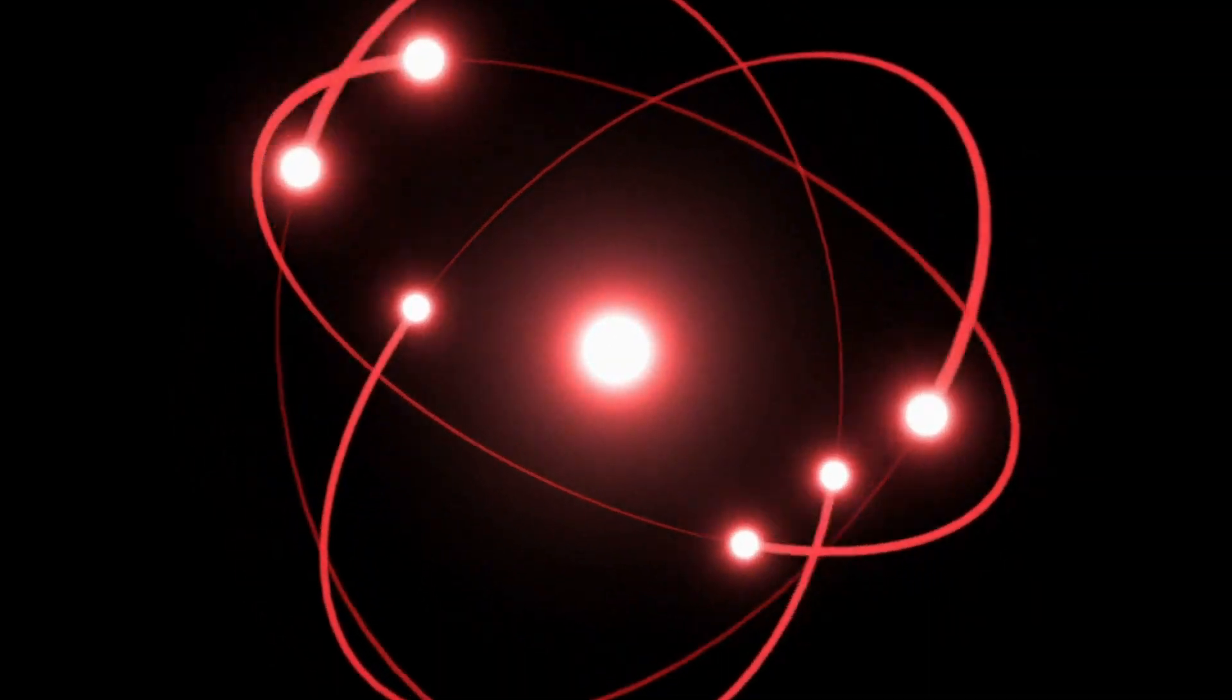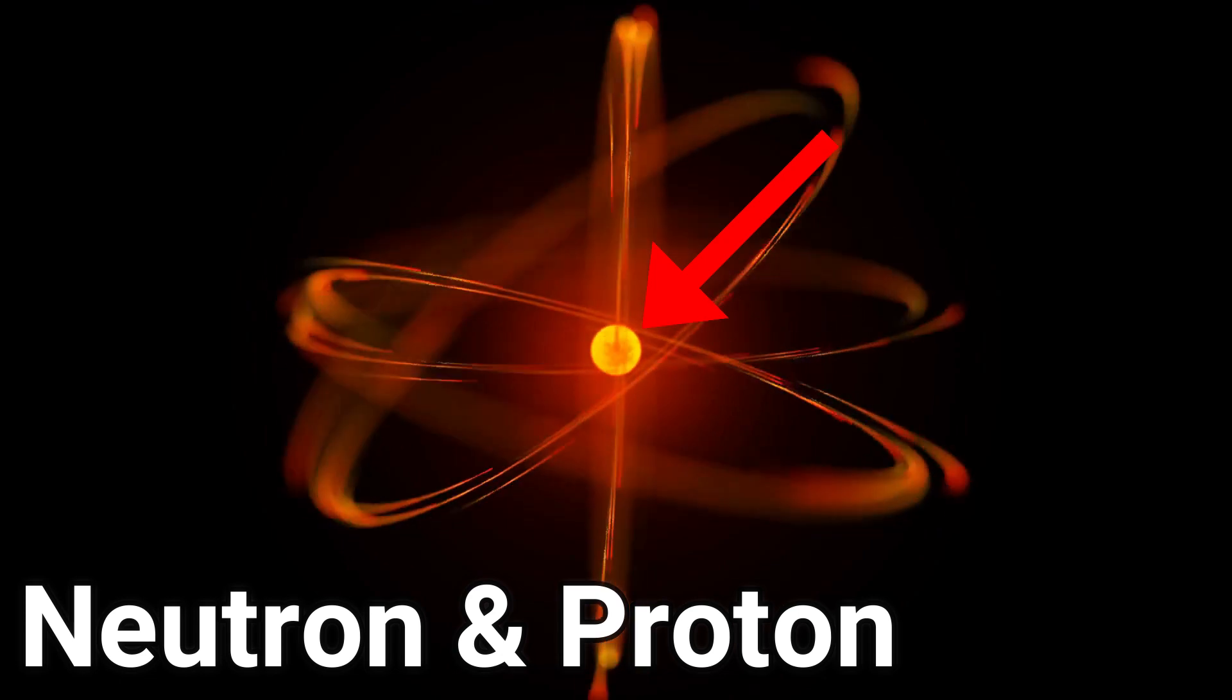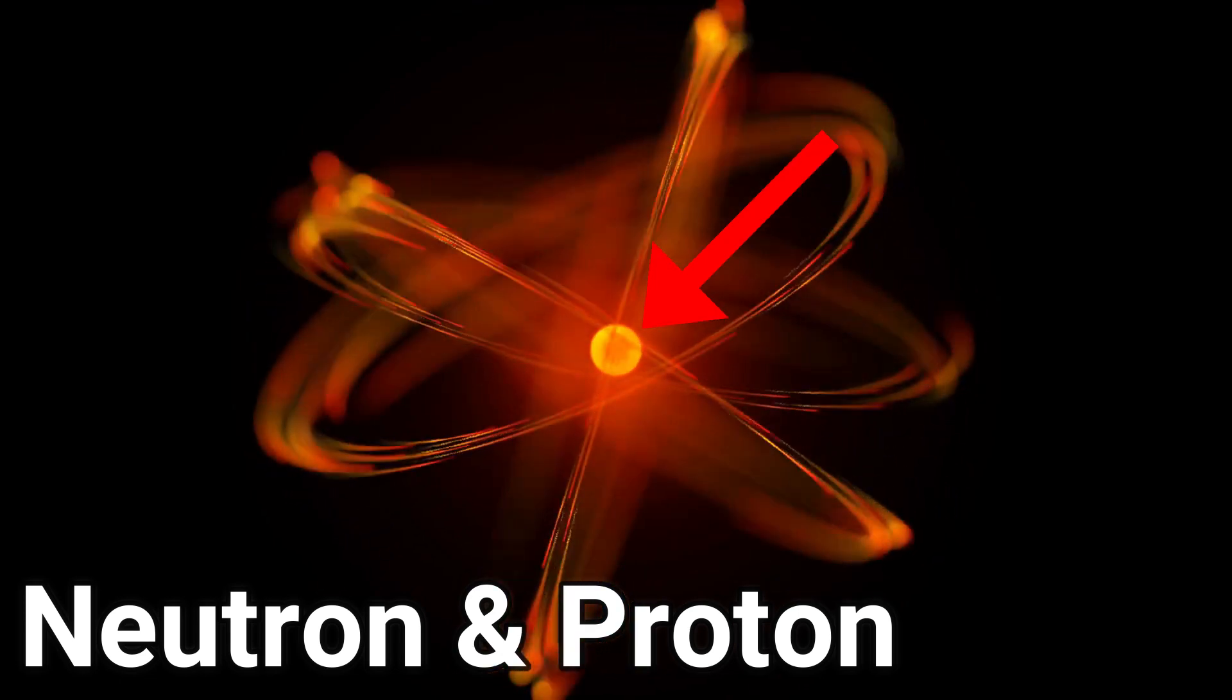But let's go inside one of these atoms. In the middle of the atom, there's a nucleus, where the neutron and proton live. And on the outer side, there's the electrons.